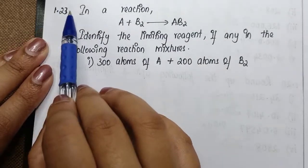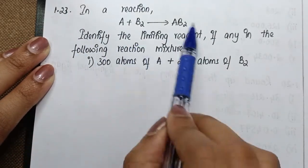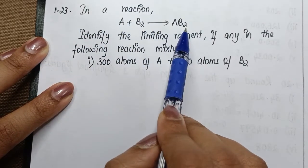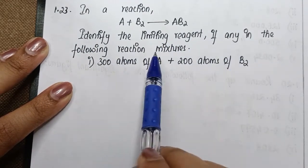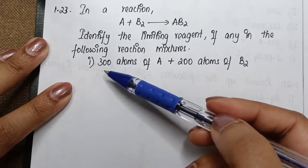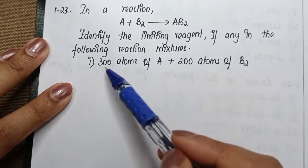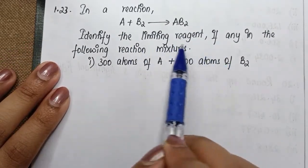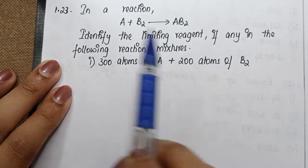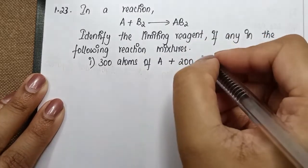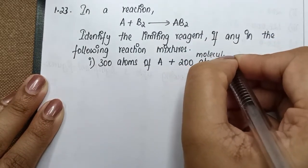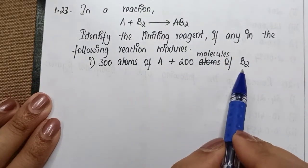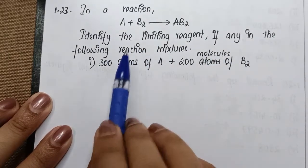In this video we're discussing question number 1.3, which is about limiting reagents. The question involves a reaction A + B₂ giving AB₂ — identify the limiting reagent, if any, in the following mixtures. There are five sub-questions to solve one by one. The first one gives 300 atoms of A and 200 molecules of B₂.